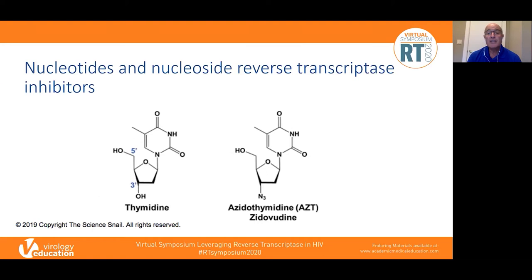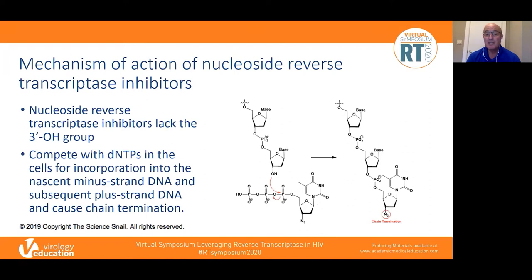Nucleoside reverse transcriptase inhibitors are analogs of naturally occurring nucleotides. Perhaps the first and best known of this class of drugs initially was zidovudine, or AZT. You can see quite clearly that the difference between the natural substrate thymidine and the drug AZT is the presence of the three-prime hydroxy group. NRTIs lack that critical three-prime hydroxy group, and these drugs compete with dNTPs in the cell for incorporation into the nascent minus-strand DNA and the subsequent plus-strand DNA, causing chain termination.